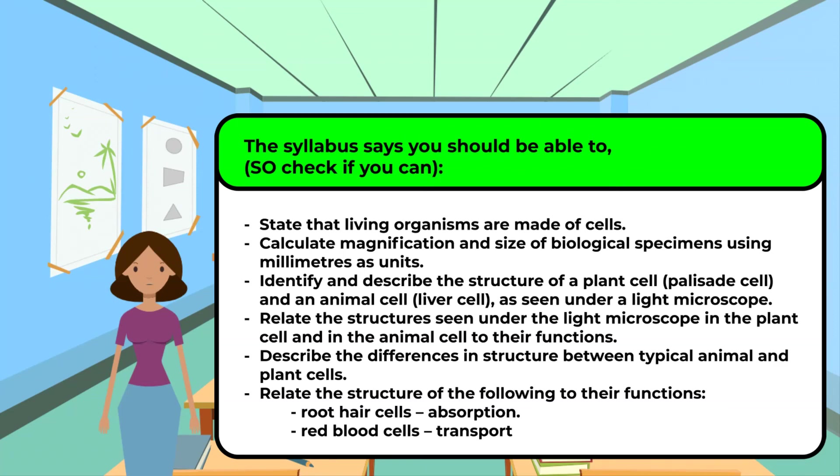4. Relate the structure seen under the light microscope in the plant cell and in the animal cell to their functions. 5. Describe the differences in structure between typical animal and plant cells. 6. Relate the structure of the following to their functions. This is root hair cells to absorption. And, red blood cells to transport.